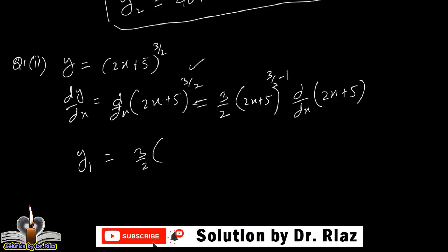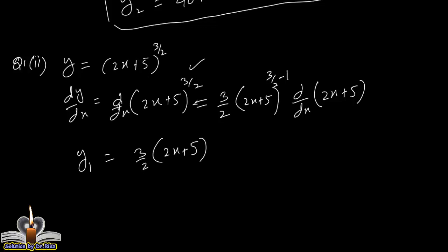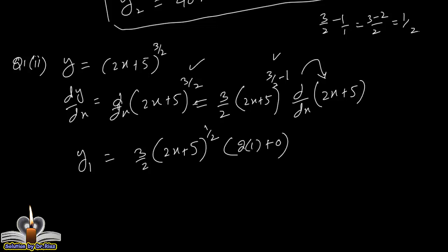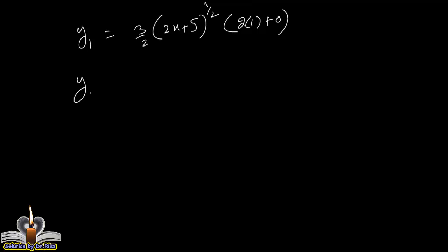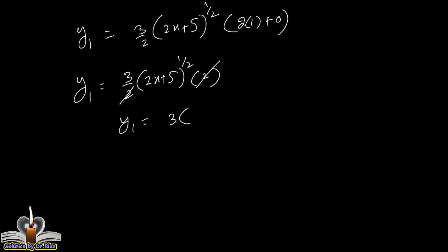تو dy/dx یعنی y1 = 3/2 into (2x+5) power (3/2 - 1)۔ LCM لیں گے تو 3/2 - 1 = 1/2، تو power 1/2 آجاتا ہے۔ Further derivative of base: 2x+5 کو differentiate کریں تو 2 آتا ہے۔ تو y1 = 3/2 into (2x+5)^(1/2) into 2، یہ دونوں multiply ہوں گے تو y1 = 3 · (2x+5)^(1/2).